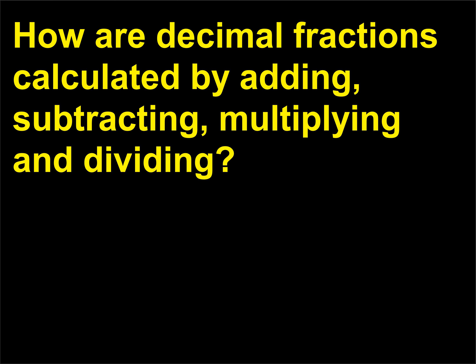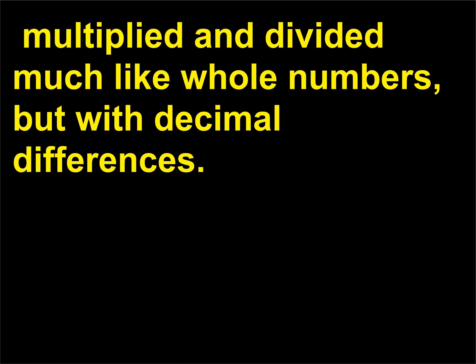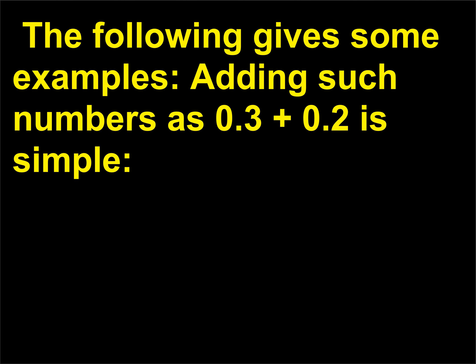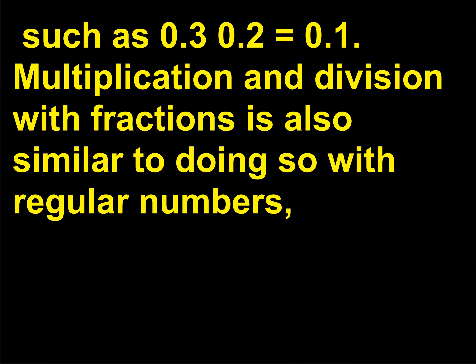How are decimal fractions calculated by adding, subtracting, multiplying, and dividing? Decimal fractions are added, subtracted, multiplied, and divided much like whole numbers, but with decimal differences. Adding such numbers as 0.3 plus 0.2 is simple: 0.3 + 0.2 = 0.5. Adding whole and decimal fractions is also easy: 2.4 + 5 = 7.4. These numbers are also easy to subtract, such as 0.3 − 0.2 = 0.1.